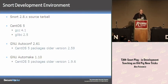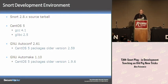My Snort development environment is basically the Snort 2.8.x source tarball — whatever the latest stable release is — running CentOS 5 with GCC 4.1 and GLibC 2.5. CentOS, or Red Hat Enterprise 5, packages slightly older versions of AutoConf and AutoMake. To get your environment in sync with the Sourcefire development environment, you'll need to build AutoConf 2.61 and AutoMake 1.10 from scratch, put them in your path, and use those tools.